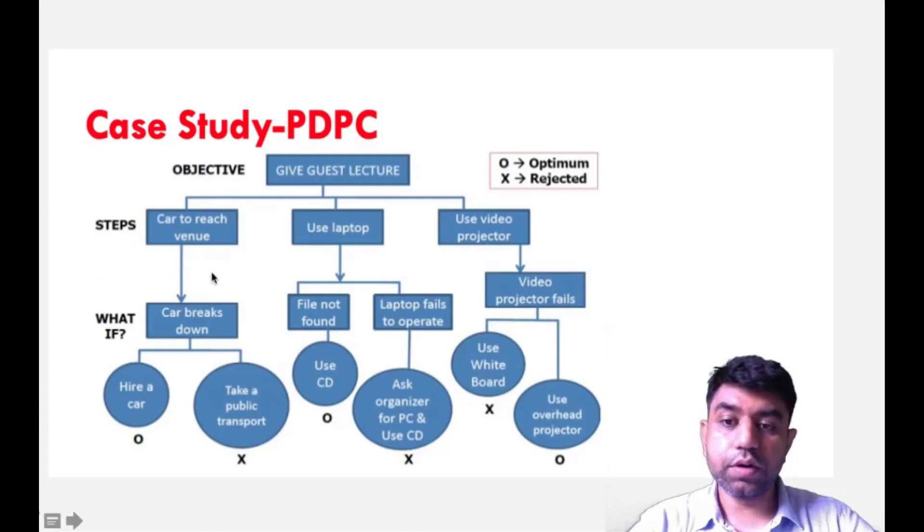The car should reach the venue on time. You need to use your laptop and you need to have use of video projector also. But what can go wrong in the case of reaching the venue? Car may break down which you are using. So you are having two options, whether to hire a car or to take public transport. By taking public transport decision, you may not reach on time. So that is rejected and hire a car has been considered as optimum condition. Use of laptop - file may not be found. So you need to have a backup of using a CD also, maybe a pen drive. When a laptop fails to operate, you need to ask organizer to have some other PC, or you need to have a backup pen drive to use on their particular device. Use of video projector - projector failed. So all the different possibilities. If you write, then your lecture will be perfectly done.